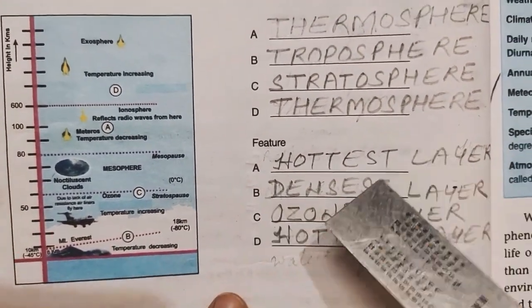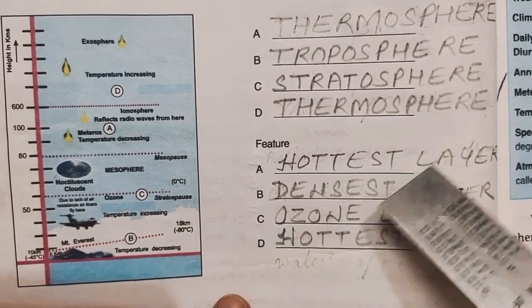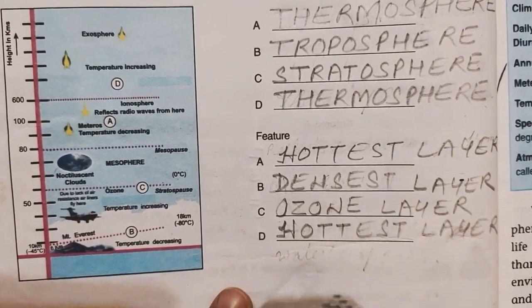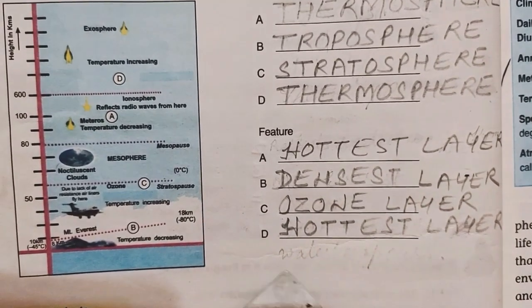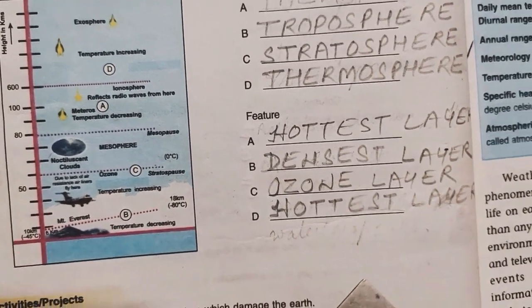There are some features of these layers. A, hottest layer of the atmosphere. B, densest layer. C, ozone layer. And D, hottest layer. That's all for today.